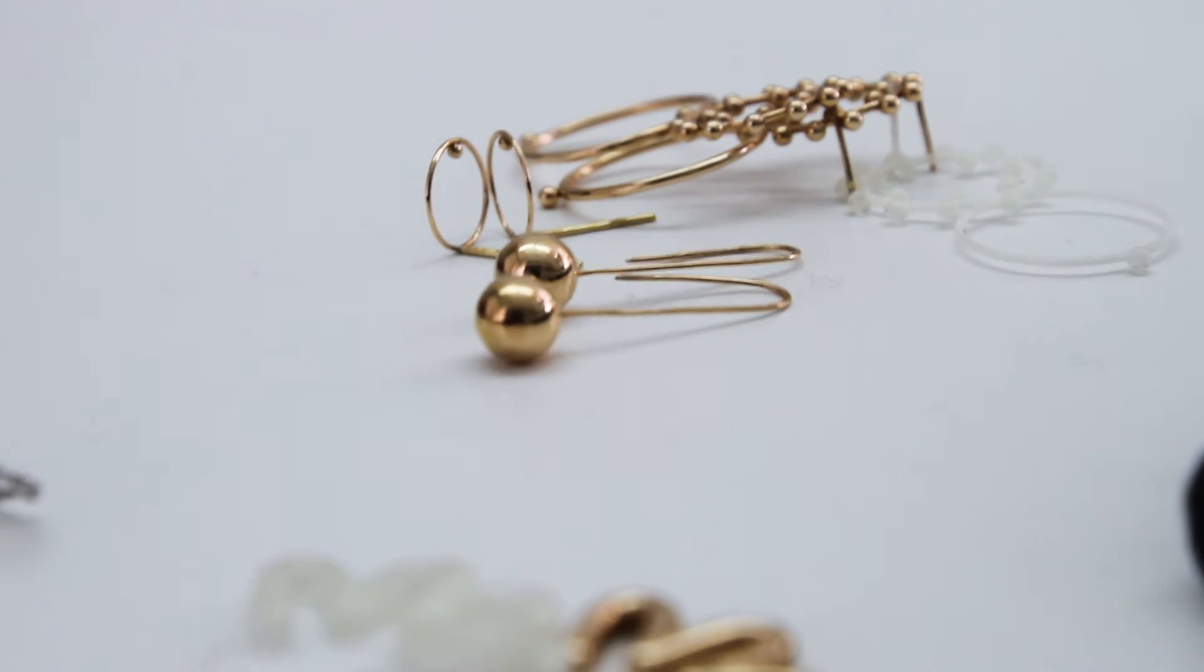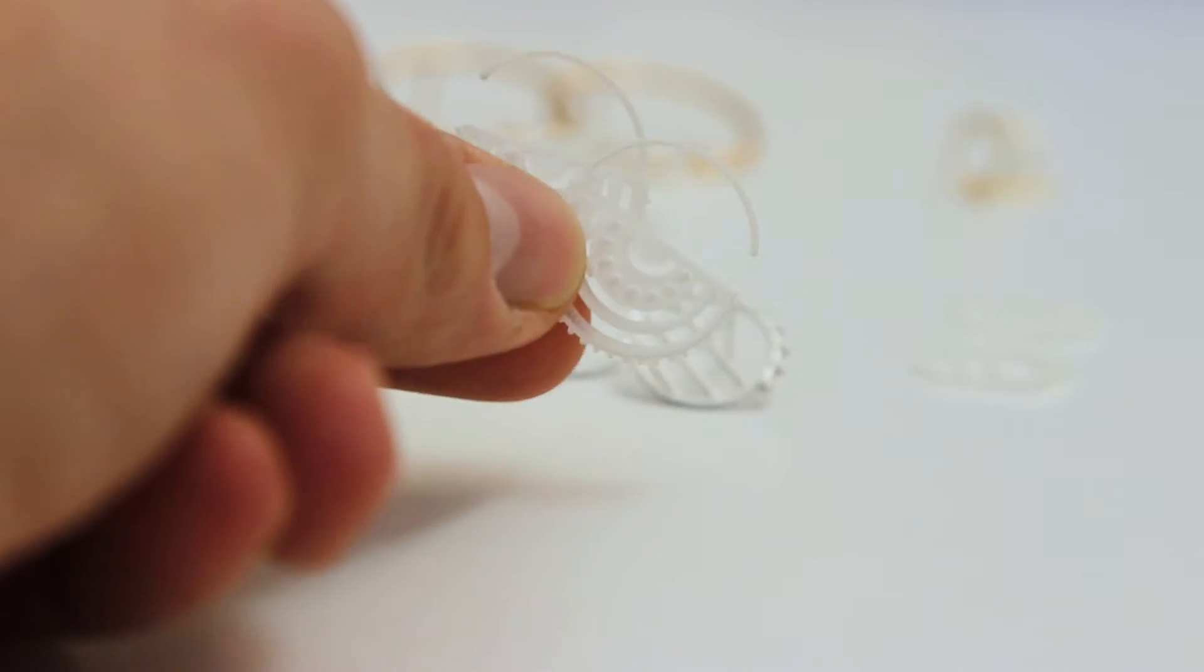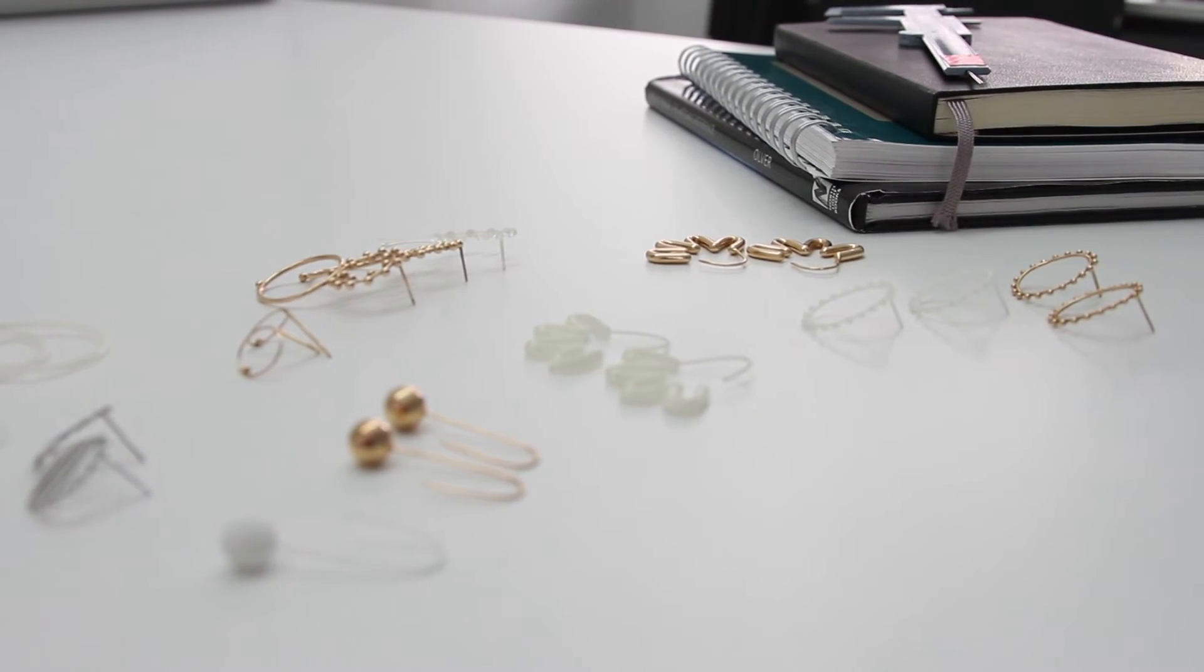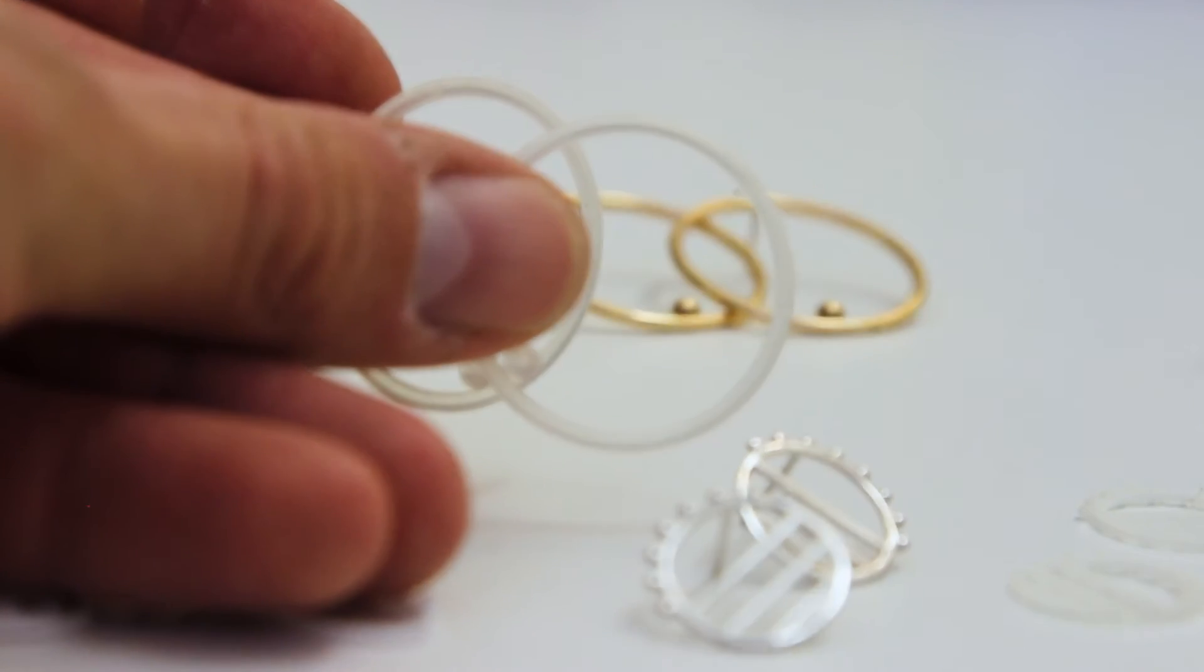Instead, initial prototyping can be printed with Frosted Ultra Detail or Strong and Flexible. These materials are great for quick turnaround and a fair understanding of the overall look and fit of your final product.